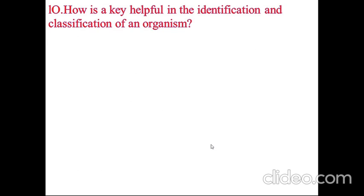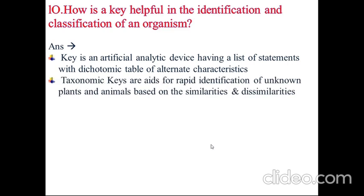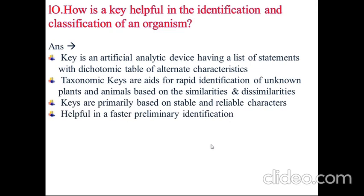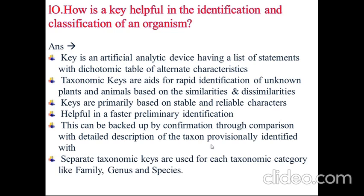How is a key helpful in the identification and classification of an organism? A key is an artificial analytic device having a list of statements with a dichotomous table of alternate characteristics. Taxonomic keys are aids for rapid identification of unknown plants and animals based on similarities and dissimilarities. Keys are primarily based on stable and reliable characters, helpful in faster preliminary identification. This can be backed up by confirmation through comparison with detailed description of the taxon. Separate taxonomic keys are used in each taxonomic category like family, genus, and species.